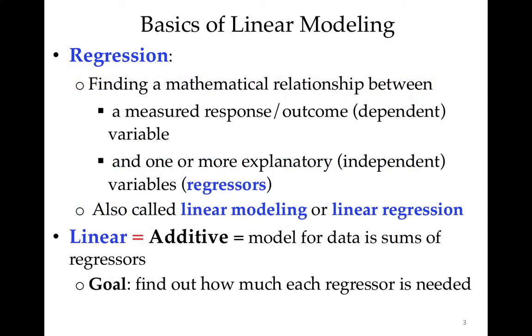Linear modeling is also called linear regression, and its goal is to find some sort of mathematical relationship between the data, what's measured, and some sort of explanatory variables, which in this jargon are called regressors. Linear means that the model is additive. The model for the data is the sums of the regressors or the components of the model, and the goal is to find out how much of each regressor is needed - two of the first one, three of the second one, and so on.